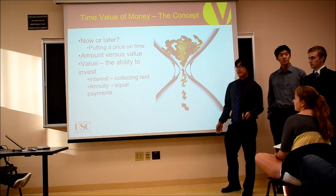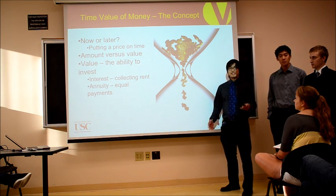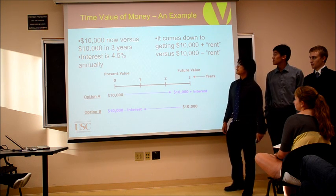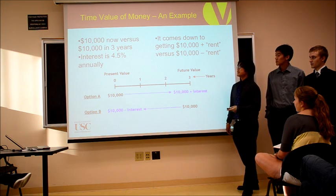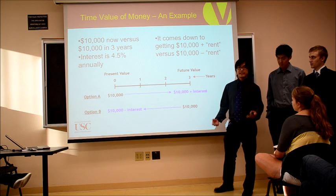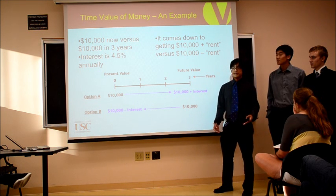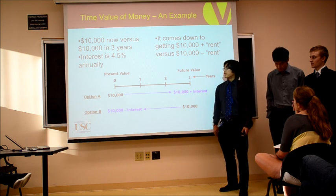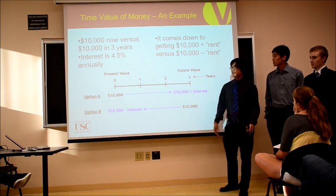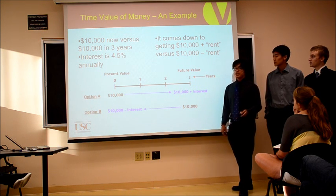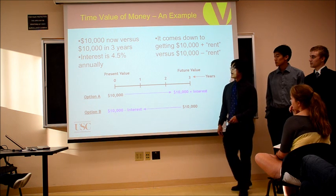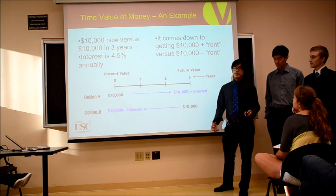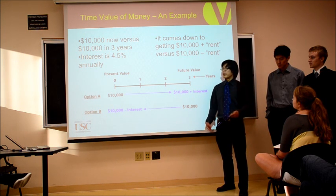So, what exactly is this? The internet example uses $10,000, and for simplicity we'll keep with $10,000. What is the difference between $10,000 now and $10,000 in three years? The answer is three years, and this brings up the idea that time is money. In order to put a value on how much time matters, you have to look at interest — like rent.